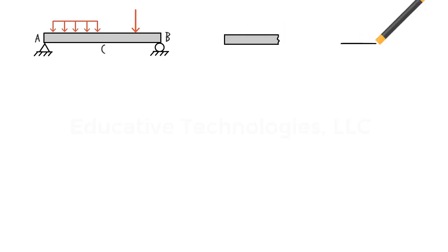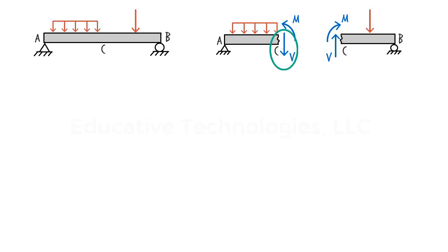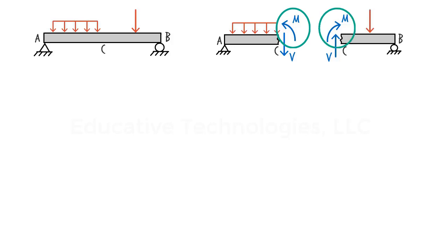If we cut this beam at its midpoint, point C, we end up with two beam segments: the left segment and the right segment. The internal forces at the cut face of the left segment are shown in one direction; for the right segment, they are drawn in the opposing direction. At C, the shear force in the left segment has the same magnitude as the shear force in the right segment — we use the same variable V — but the two forces have opposing directions, one drawn upward and the other downward, since their algebraic sum must be zero. The same is true for the bending moment at C: the moment for the left segment is drawn counterclockwise, whereas for the right segment it is drawn clockwise. Since both moments have the same magnitude, their algebraic sum is zero.